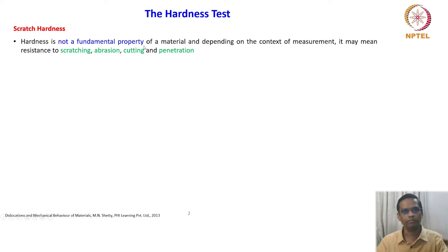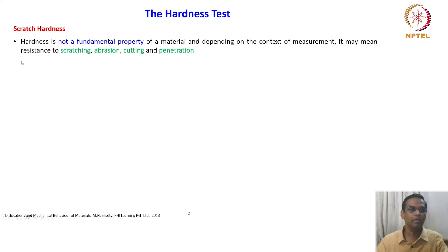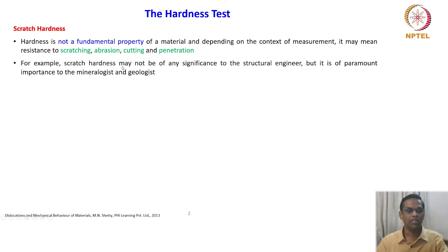Hardness is not a fundamental property. It is not like Young's modulus, shear modulus, or Poisson's ratio. However, it is very important in the context of engineering applications. Hardness is not a fundamental property of the material, and depending upon the context of measurement, it may mean resistance to scratching, abrasion, cutting, and penetration. For example, scratch hardness may not be of any significance to a structural engineer, but it is of paramount importance to a mineralogist and geologist.